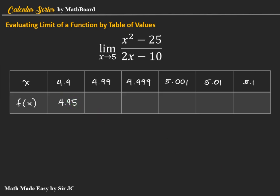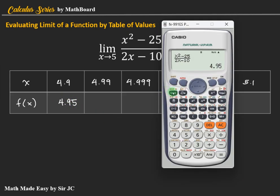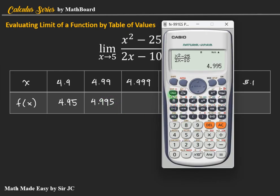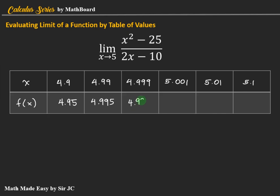Then for 4.99, press calc, 4.99 equals 4.995. Then for 4.999, the result is 4.9995.